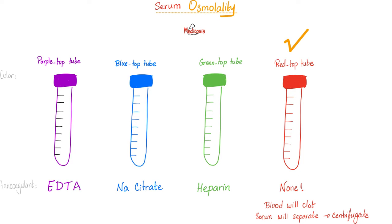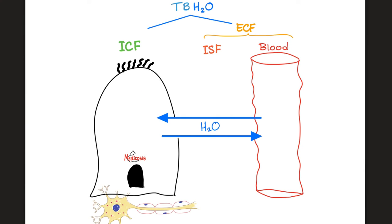What tube do we use? Red top tube — no anticoagulant added, which means the blood will clot. The serum and the plasma will separate from the clotted blood. Serum will float on top. Take that serum, stick the osmometer in it to measure the number of osmols.